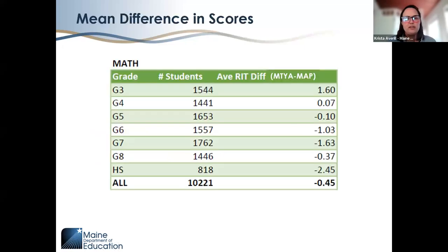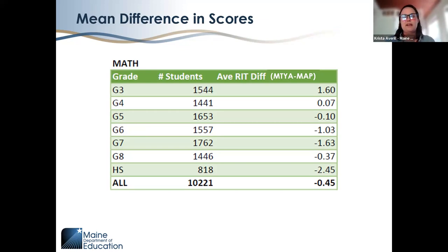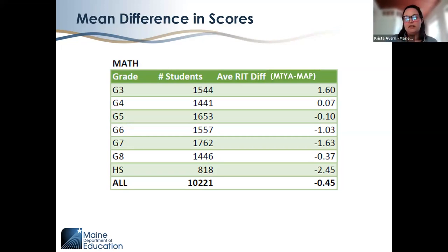Now let's look at math. As a reminder of the mean difference methodology: for each student who double tested — taking both the Three-Year Assessment and MAP Growth in spring 2023 — we took their Maine Three-Year Assessment score minus their MAP Growth score, then found the average for each grade and content area. The expectation is that the absolute value of those averages is less than the typical standard error of measurement for MAP Growth, with the lower range being 2.8.